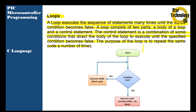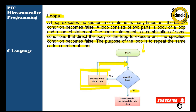Here is the loop start. When the condition is true, it will execute this block of statements. After executing the block of statements, it will again check the loop condition. If true, it will again execute the block. When the condition is false, it will exit from the loop and execute the next block of statements.